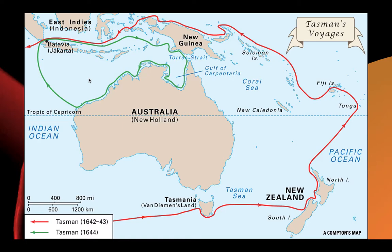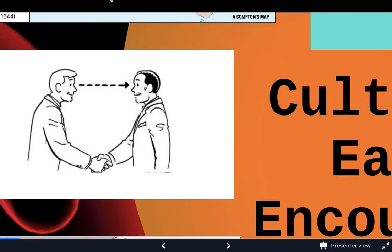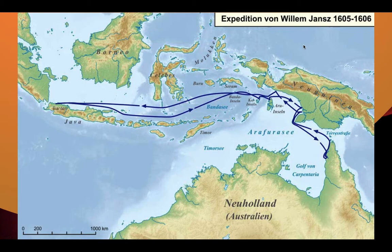One of the first things that's important to understand is that Captain Cook was not on the First Fleet — that was Captain Arthur Phillip. Furthermore, Captain Cook was not the first Westerner to visit Australia and Indigenous peoples. There were lots of explorers who came before, such as Abel Tasman, who did two voyages to Australia — which is where we get the name Tasmania from — and William Yance, who was looking for opportunities to trade.